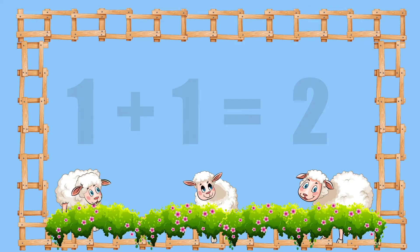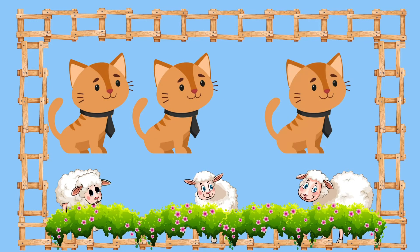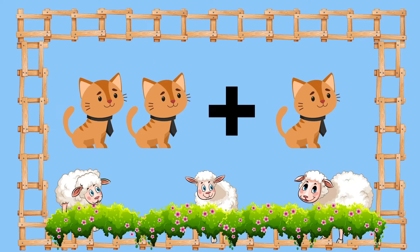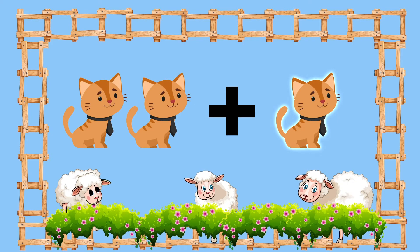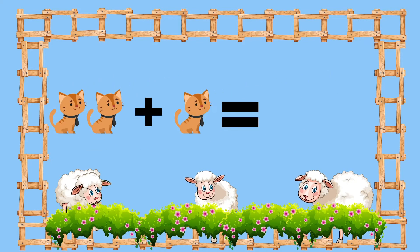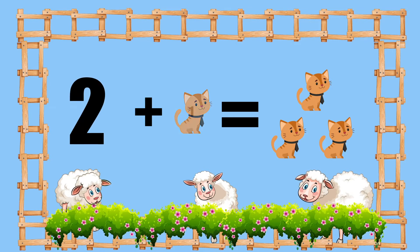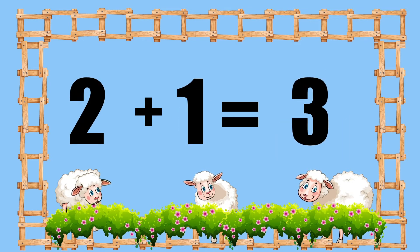Similarly, here are two cats and here is one cat. Let's add them: one, two, three. So two cats plus one cat equals to three cats, which means two plus one equals to three.